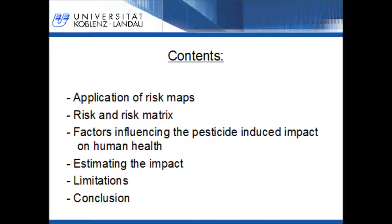First, I will show you an example for the application of risk maps in an early warning system. Then, I will present a general definition of risk and how this definition is related to the pesticide-induced risk on human health. Next, I will explain how the pesticide-induced impact is related to the conditions in the agricultural workflow and how the impact on human health can be estimated. Last, I will talk about the limitations of this method and give a short conclusion.